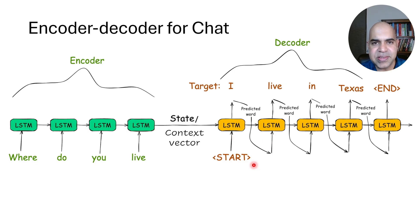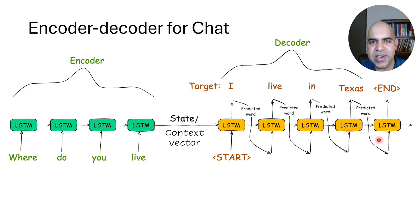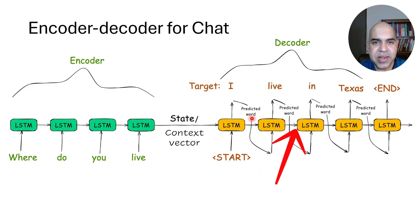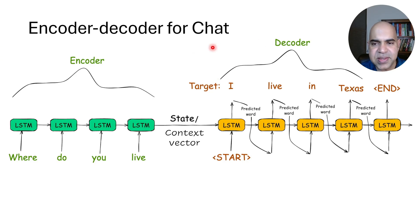The decoder has five inputs: start, then I, live, in, Texas. During training with teacher forcing, these words will be inputs to the LSTM one after another. During inference, we reach an end of sequence. This is the encoder LSTM and this is the decoder LSTM for a chat application that we discussed earlier.